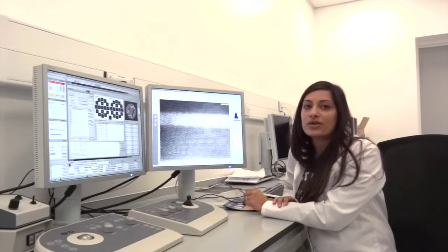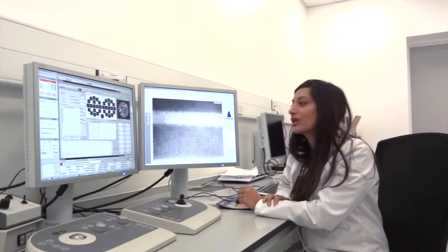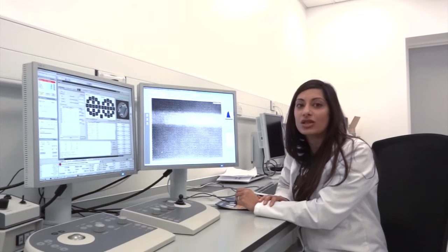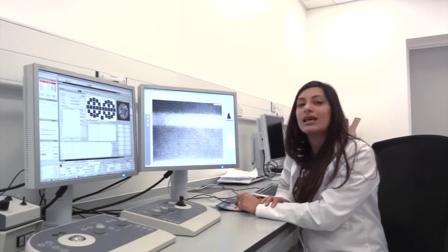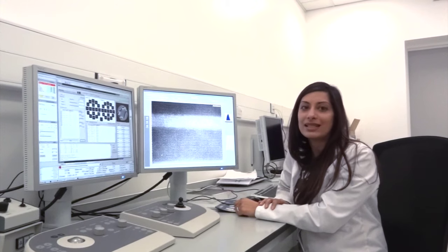So the electron microscope is a really powerful tool for understanding the exact atomic structure of these very thin layers which are inside the heart of the LED.